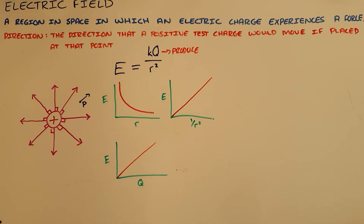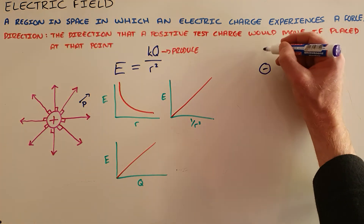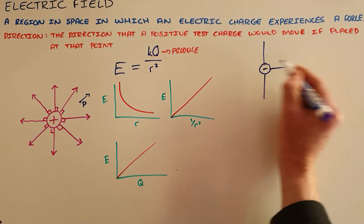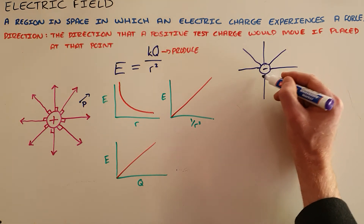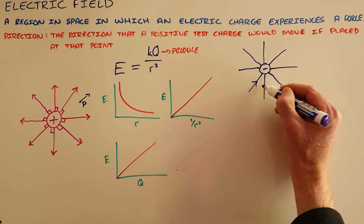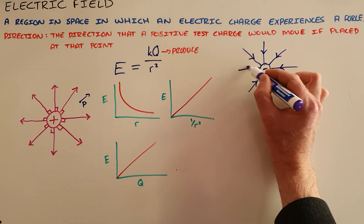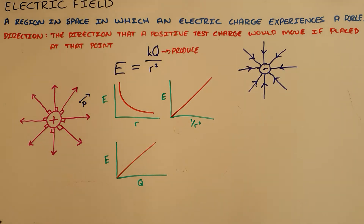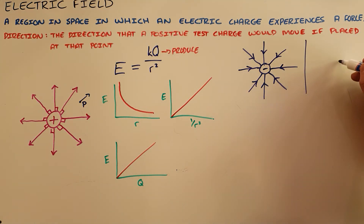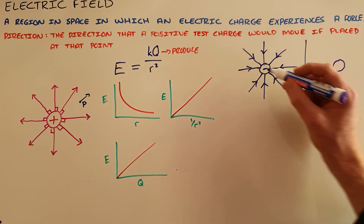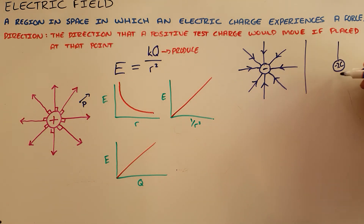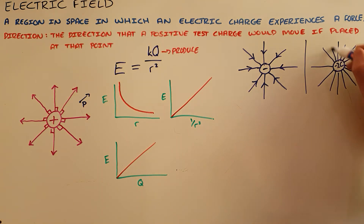It is important to be able to draw the electric field around a positively charged object. Similarly, around a negatively charged object, the field pattern remains exactly the same. The difference is that a positive test charge placed in this field would move towards the negatively charged object, so the arrows point in a different direction. All the rules for field lines still apply. An object with a bigger charge — for example, negative 2 coulombs versus negative 1 coulomb — would be illustrated by drawing twice as many field lines, since the number of field lines is representative of field strength.